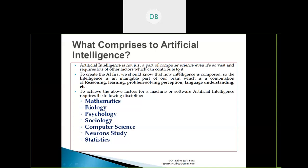To create AI, we must first understand how intelligence is composed. Intelligence is an intangible part of our brain — a combination of reasoning, learning, problem-solving, perception, and language understanding. These different factors cannot come from one discipline. To achieve these factors, AI requires contributions from mathematics, biology, psychology, sociology, computer science, neuroscience, and statistics.